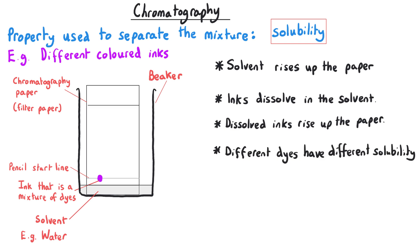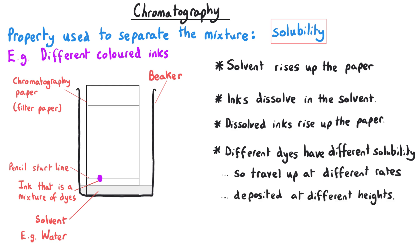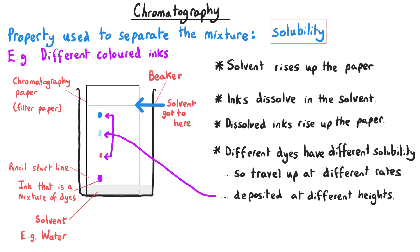The different dyes that make up the ink will travel up the paper at different rates, and so eventually those inks will separate out and form spots that finish in different places. We stop the chromatography when the solvent has got towards the top of the paper — it doesn't need to reach the very top, but close to it, because that allows the greatest separation for our spots.